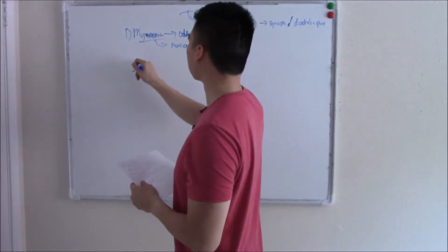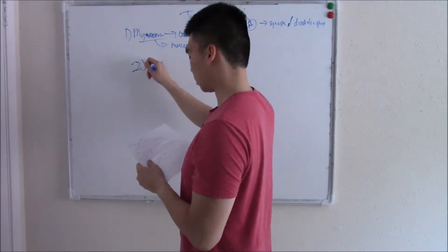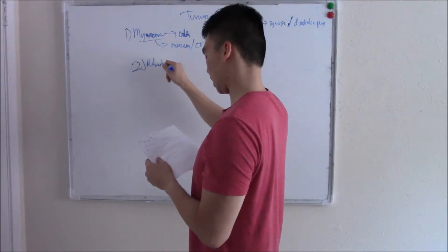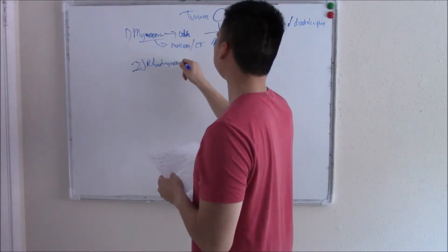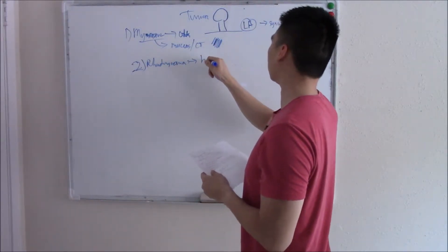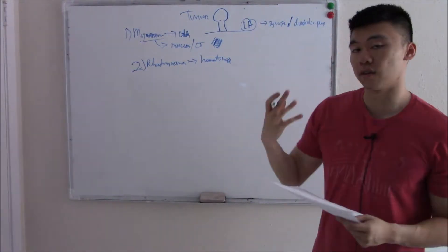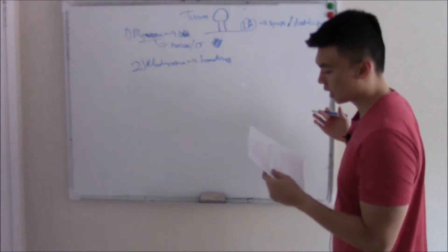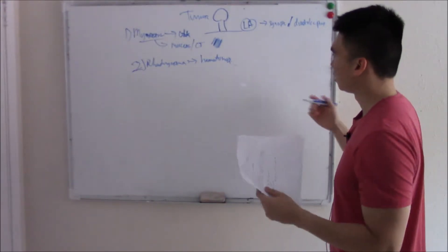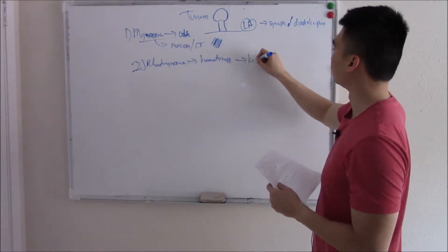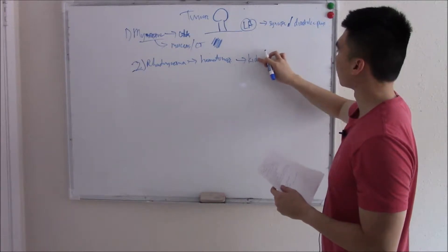The second one affects children. And that is rhabdomyoma. This is a hamartoma. What does that mean? This is an overgrowth of normal tissue. Benign. Overgrowth of normal tissue. Seen in the kid.